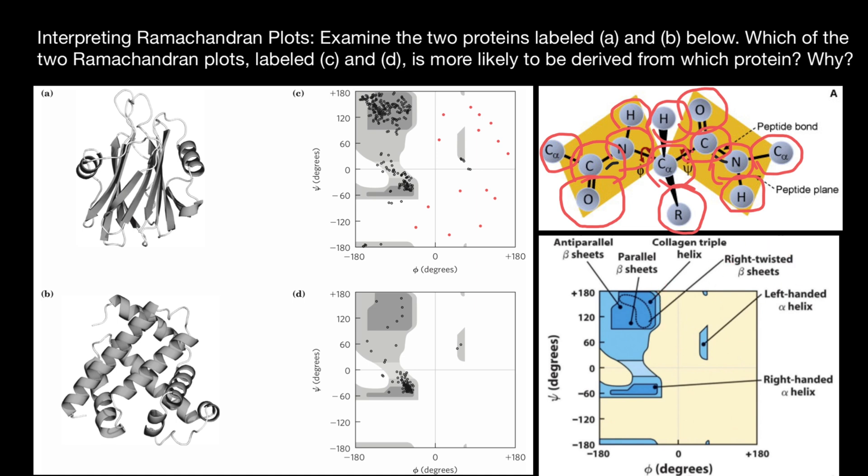And we also can see here collagen triple helix here, and right-twisted beta sheets here. So basically, there are three areas here.